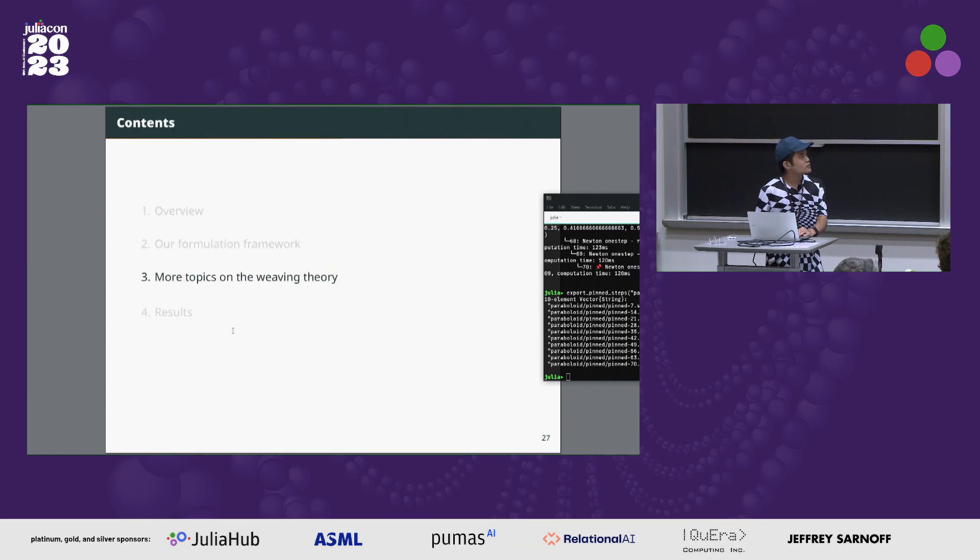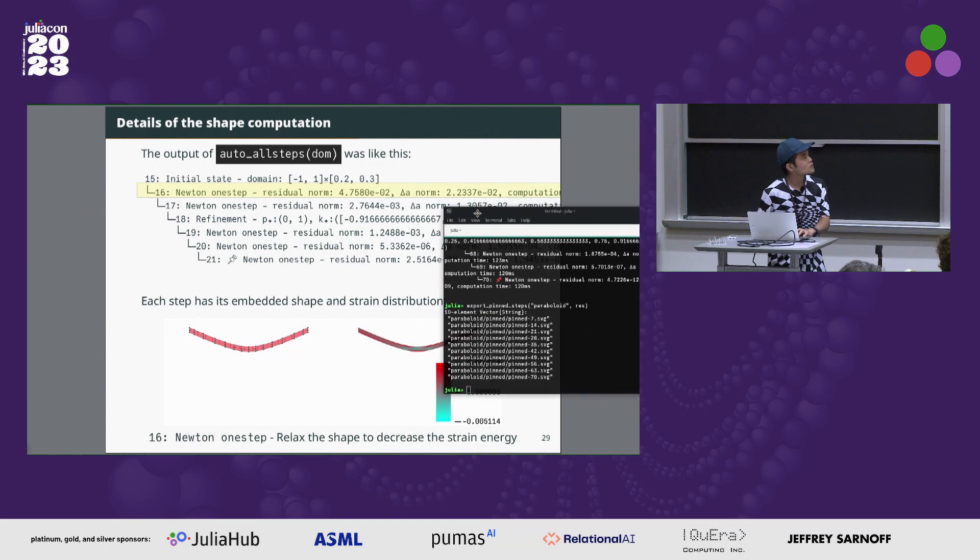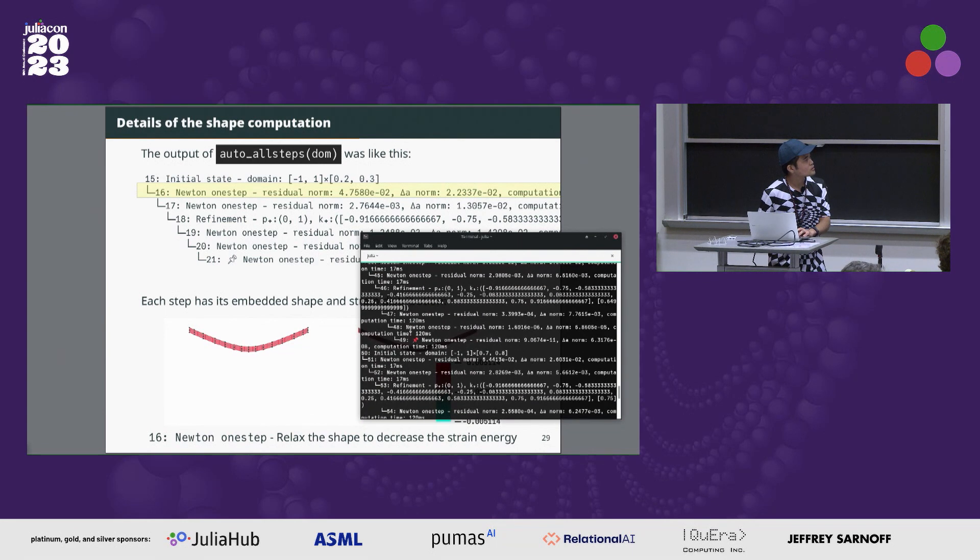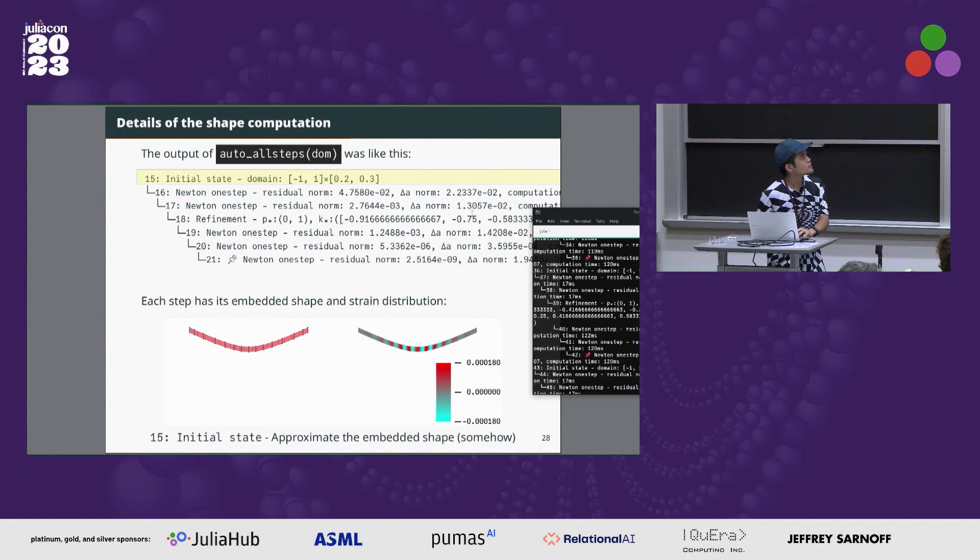Let's dive into more topics. The output of the function was like this. In the repo we have a tree structure like this. This first step is the initial state of this domain.